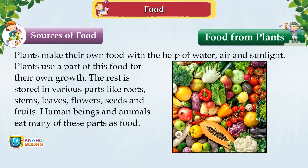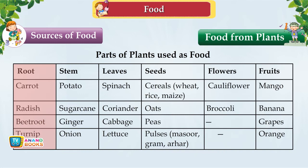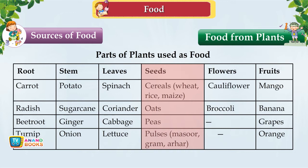Parts of plants used as food: Roots — carrot, radish, beetroot, turnip; Stems — potato, sugarcane, ginger, onion; Leaves — spinach, coriander, cabbage, lettuce; Seeds — cereals: wheat, rice, maize, oats; Pulses — masoor, gram, arhar; Flowers — cauliflower and broccoli; Fruits — mango, banana, grapes and orange.